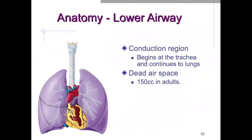Now let's take a look at the lower airway. The conduction region begins at the trachea as it travels down into the lungs. In its full structure, it contains approximately 150 cc's or milliliters of air in the adult. This is air that just holds these structures open, contained within all of the cartilage — it's not where gas exchange happens. This is our conduction region, which moves air in between.